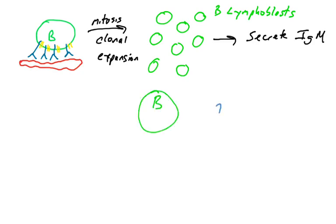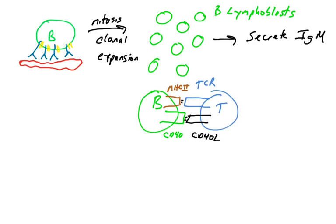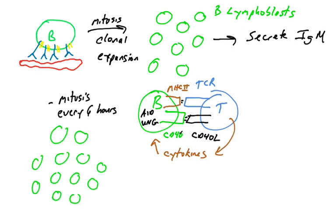Some of these B lymphoblasts will continue engaging with T cells. There's protein-protein interactions between proteins on the surface of the B cell and proteins on the surface of the helper T cell. That T cell will also secrete cytokines that will turn on enzymes like AID and UNG, which will allow this B cell to undergo somatic hypermutation and isotype switching.